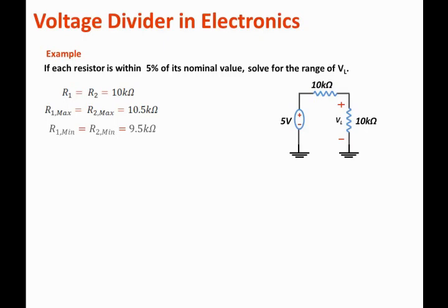The maximum voltage occurs when the load resistance is large, is maximum, and the internal resistance is minimum. So under this condition we can say that VL_Max will equal to 10.5k, that's the maximum value for the load resistance, over 9.5k, that's the minimum value for R_Min, plus 10.5k, that's the maximum value for RL, times 5 volts.